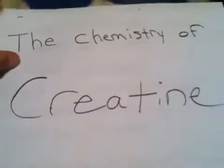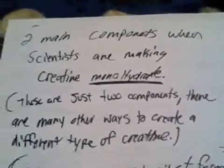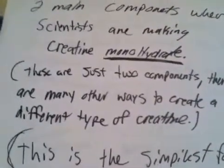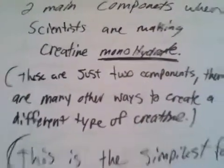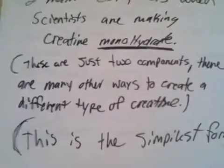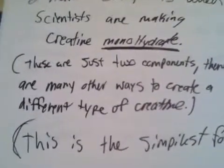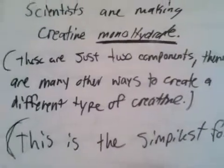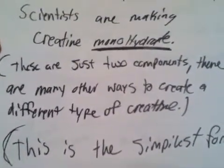The chemistry of creatine. There are two main components when scientists make creatine monohydrate. Creatine monohydrate is just the simplest form of creatine. There are many different types of creatines. The next two components I'm going to show you are the main components in making creatine monohydrate.